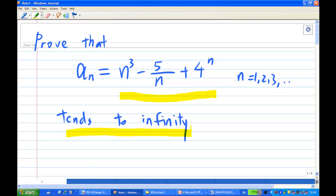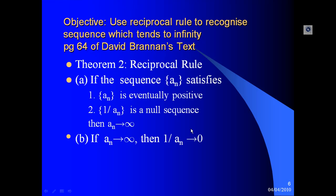For this, I am going to use a result called the reciprocal rule. The statement of the reciprocal rule is on page 64 of David Brennan's text. It says that if a sequence aₙ satisfies two conditions — if aₙ is eventually positive and 1/aₙ is a null sequence — then aₙ tends to infinity. So we must prove these two conditions.